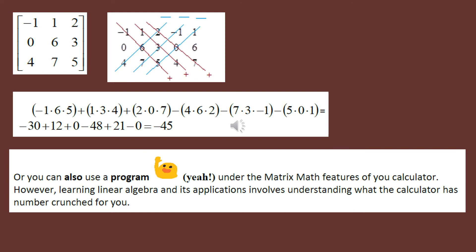In the long run, we'll be running programs on our calculator or Desmos. If you go into matrix mode and go to math, determinant is the very first program in the list. You hit determinant, go into matrix names, and tell it which matrix you want to use. If you're working on your computer, Desmos has determinant as one of its calculations. But as a linear algebra student, you do want to know some of the background theory to what your calculator is number crunching for you.